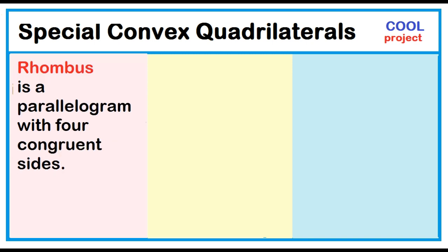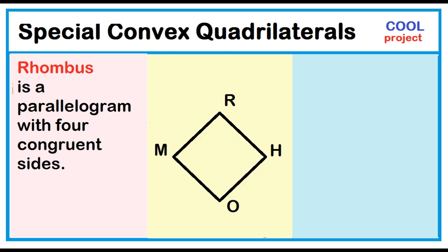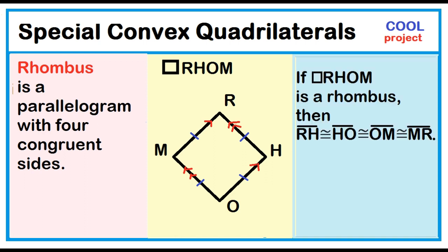A rhombus is a parallelogram with four congruent sides. Quadrilateral RHOM has two pairs of opposite sides and four congruent sides. If quadrilateral RHOM is a rhombus, then segment RH is congruent to segment HO, segment OM, and segment MR.